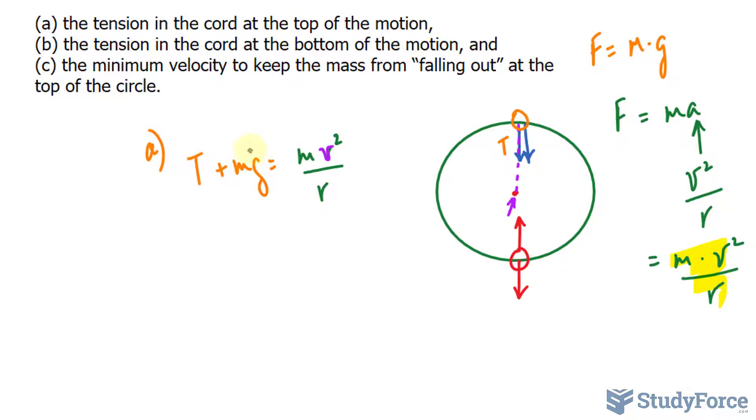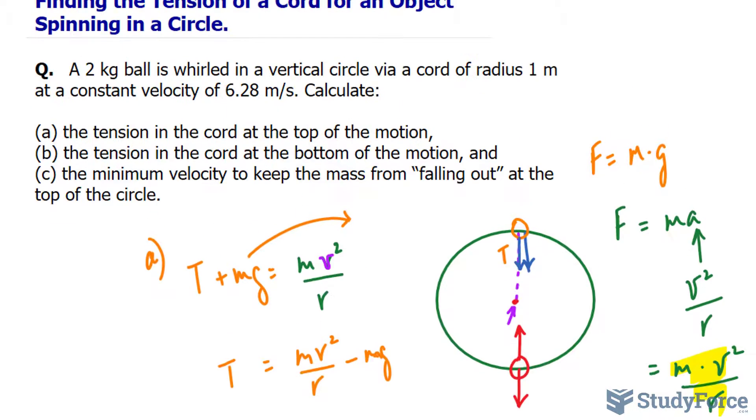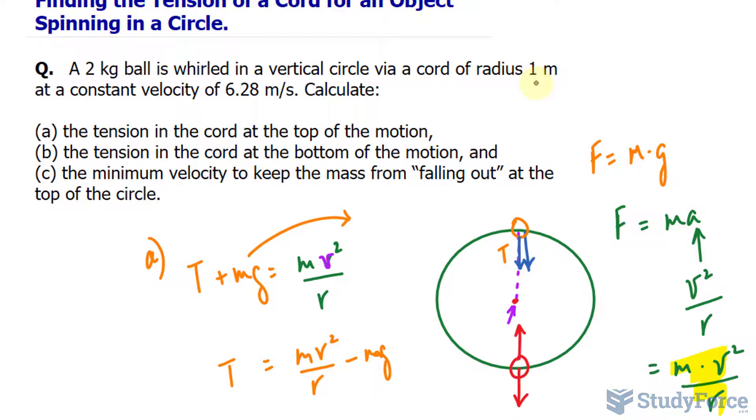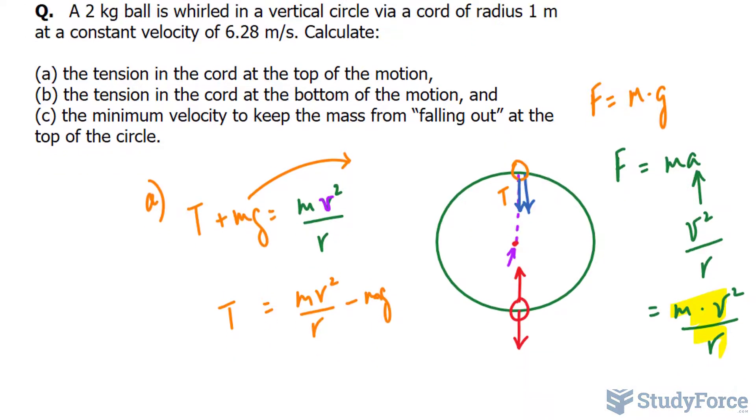So we need to find out what the tension is. I will take this term over to the right side, where I have T is equal to mv squared over r minus mg. g can be replaced with 9.8. r can be replaced with what it was, 1 meter. The velocity can be replaced with 6.28, and the mass is given. So this is actually an easy problem.